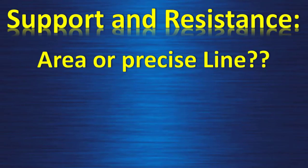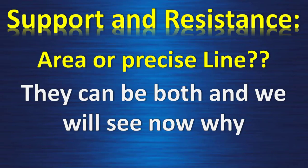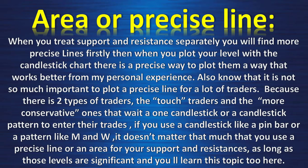Support and resistance — are they areas or precise lines? They can be both, and we will see why. When you treat support and resistance separately, you will find more precise lines. When you plot your level with the candlestick chart, there is a precise way to plot them — a way that works better from my personal experience. Also know that it is not so important to plot a precise line for a lot of traders, because there are two types of traders: the touch traders, and the more conservative ones that wait for a candlestick or candlestick pattern to enter their trades. If you see a candlestick like a pin bar or a pattern like an M and W, it doesn't matter as much whether you use a precise line or an area — as long as those levels are significant. The touch traders enter exactly at the level — that's why they need a precise level — and it's also helpful when you do scalping or short-term trading.